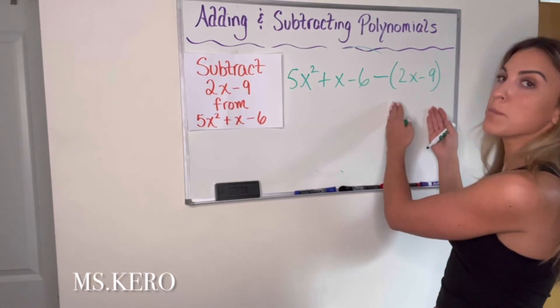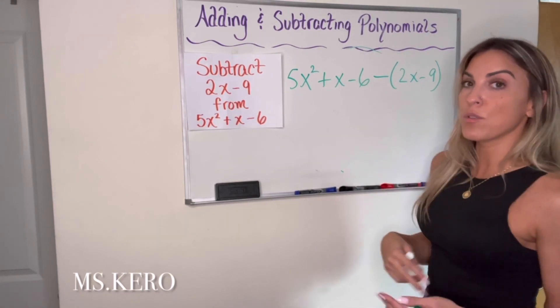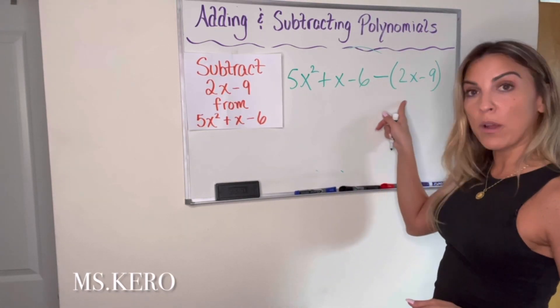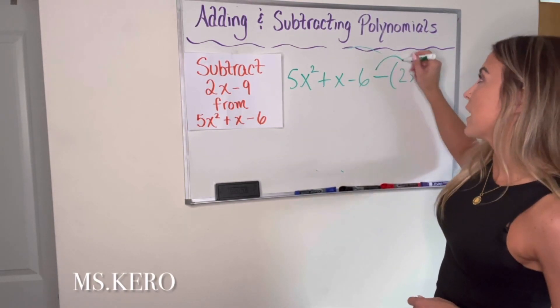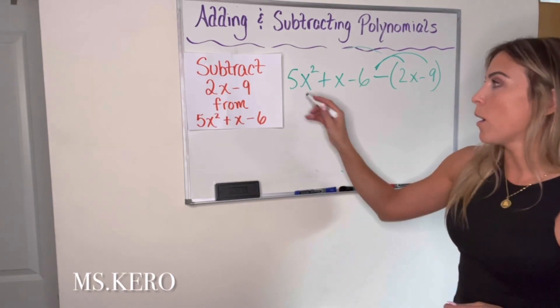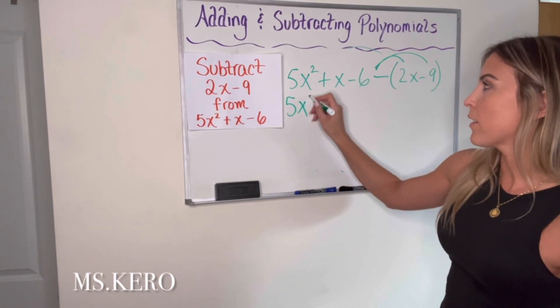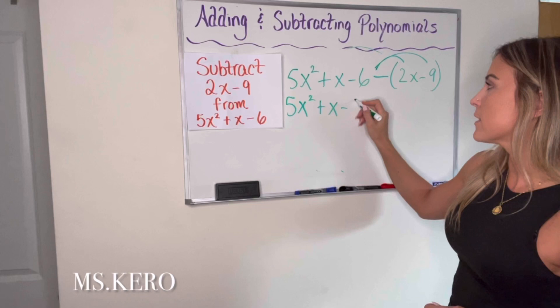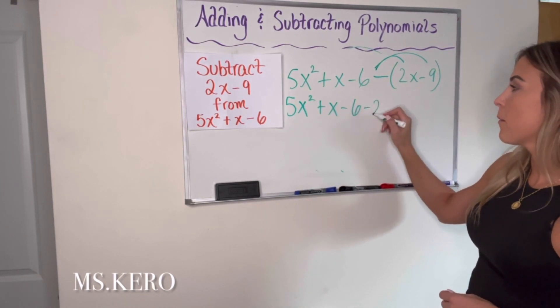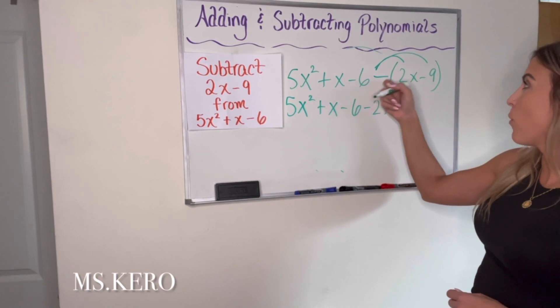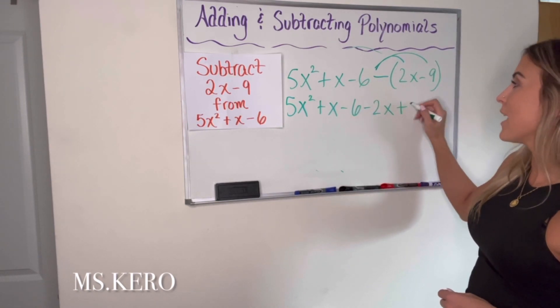So the way we show that is by writing the parentheses. And now as you just learned, because it's in parentheses with a minus sign in front of it, that minus sign is going to have to get distributed out to both of these terms. So I'll bring down the first three terms, 5x squared plus x minus 6. And now we're doing negative 1 times 2x minus 2x. Negative 1 times negative 9, positive 9.